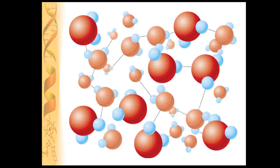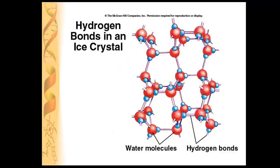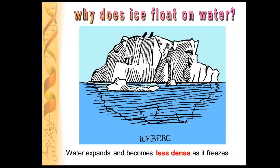Here's a more three-dimensional view of those hydrogen bonds creating a lattice between water molecules. This is what hydrogen bonds look like in an ice crystal. Ice floats on water, which is very important for life — if you were a fish living underwater during the winter, you wouldn't want ice to form on top and then crush you as it sank to the bottom. Water expands when it freezes, becomes less dense, and that's what allows ice to float on water.